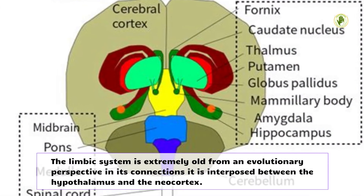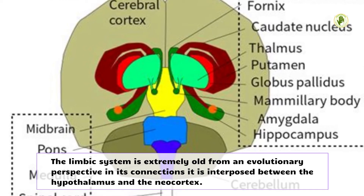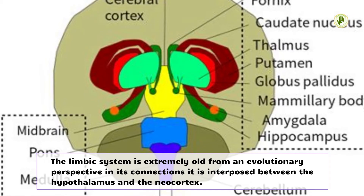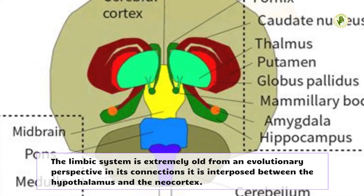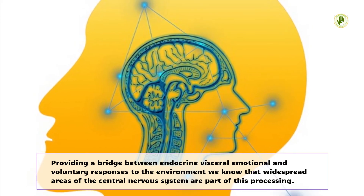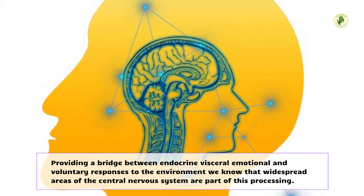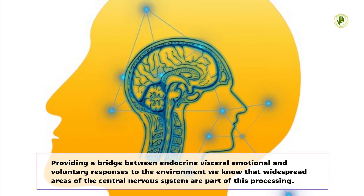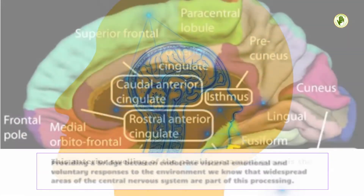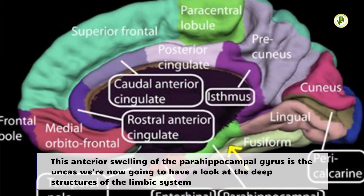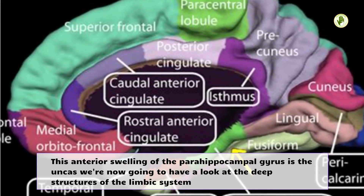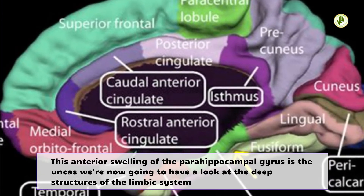The limbic system is extremely old from an evolutionary perspective. In its connections it is interposed between the hypothalamus and the neocortex, providing a bridge between endocrine, visceral, emotional, and voluntary responses to the environment. We know that widespread areas of the central nervous system are part of this processing. This anterior swelling of the parahippocampal gyrus is the uncus. We're now going to have a look at the deep structures of the limbic system.